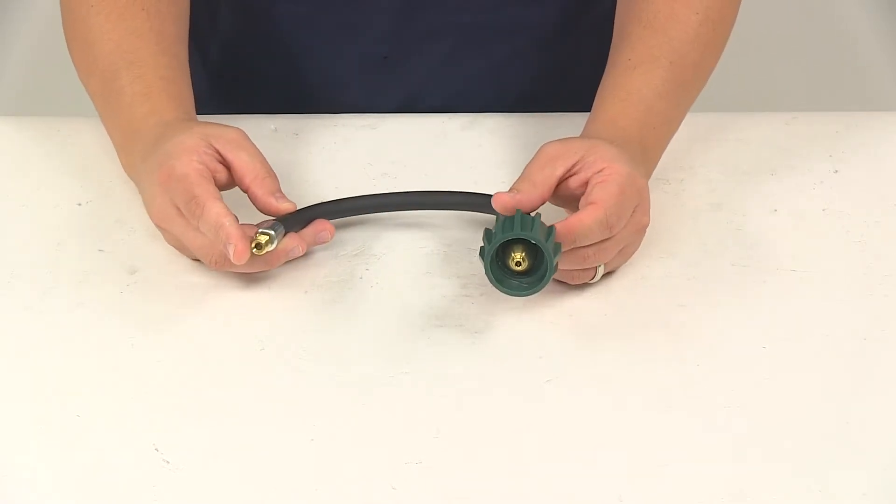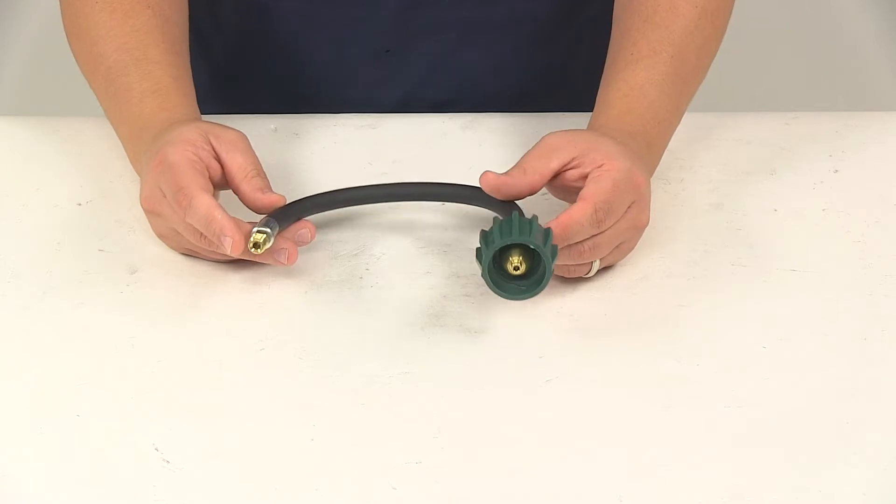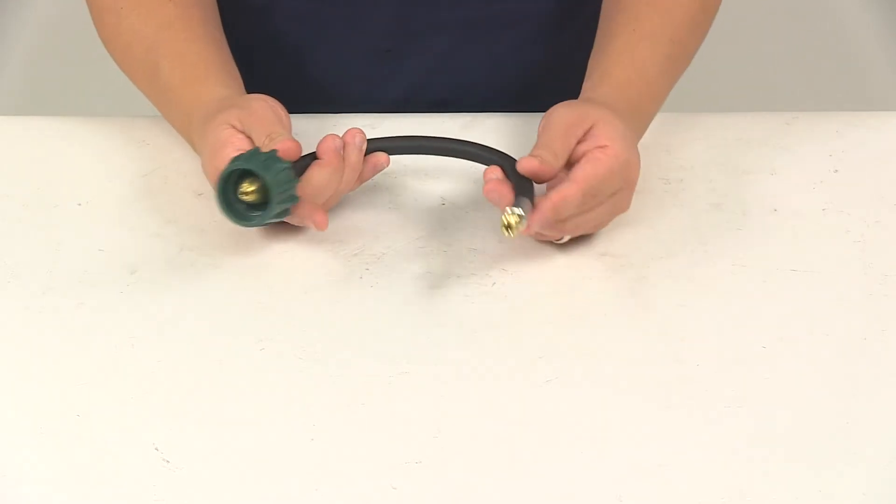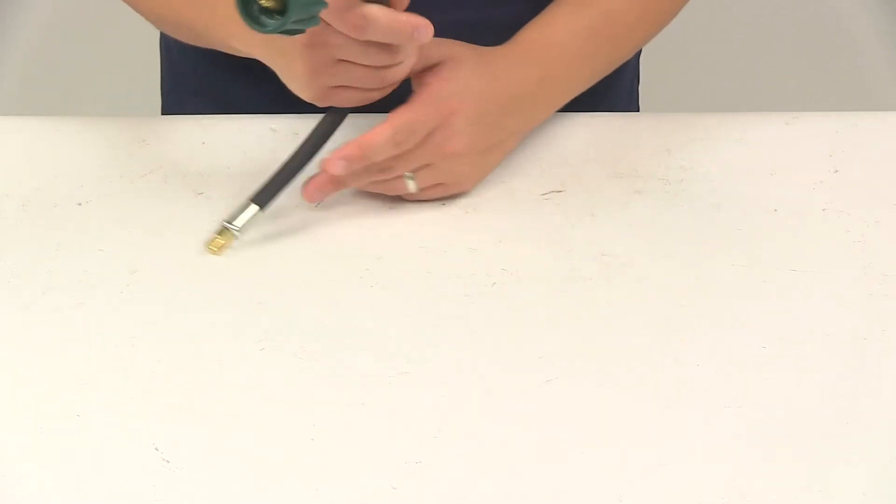It is designed for LP gas only, that's liquid propane, and this assembly has a temperature range of negative 40 degrees Fahrenheit to 140 degrees Fahrenheit.